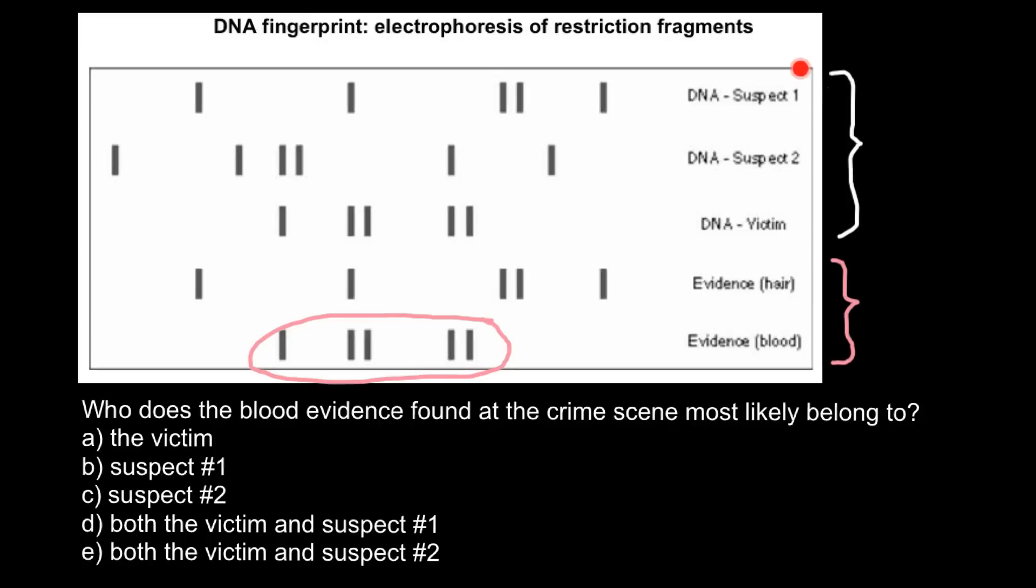Now we have to compare with these three samples. As you see, this is the same fingerprint as we have in this line, and this is DNA of the victim. So at the crime scene, blood evidence was collected from the victim. This is answer A.